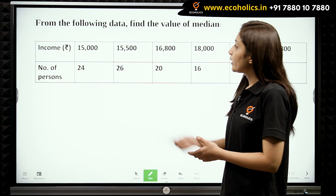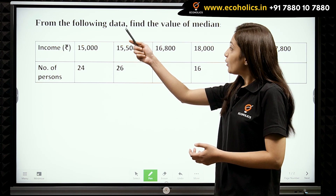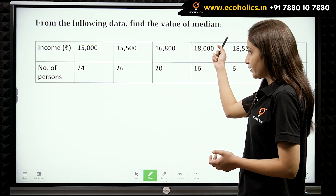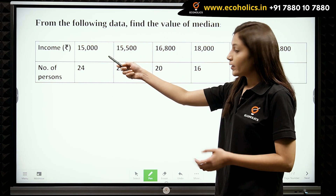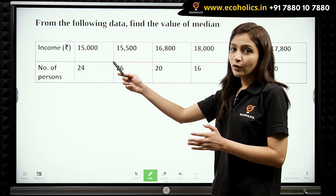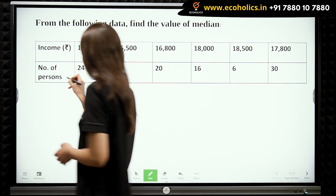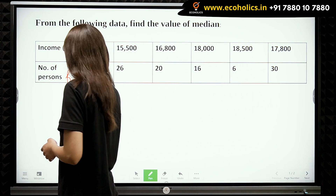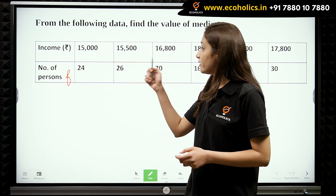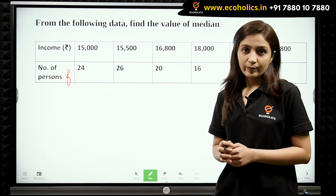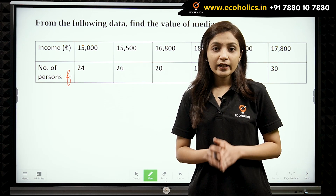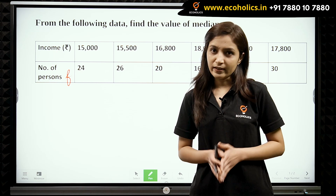We have this question: from the following data, find the value of median. We have income in terms of rupees and we have number of persons, which represents our frequency. Firstly, we need to arrange our data either in ascending order or descending order.